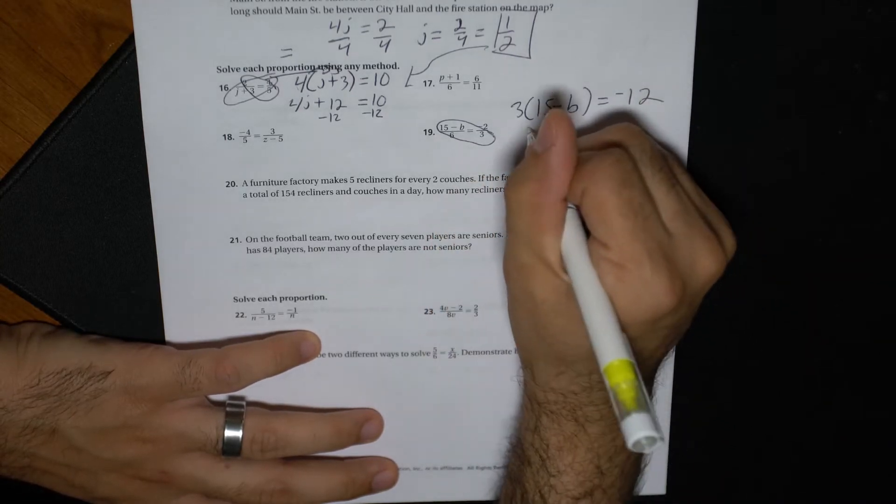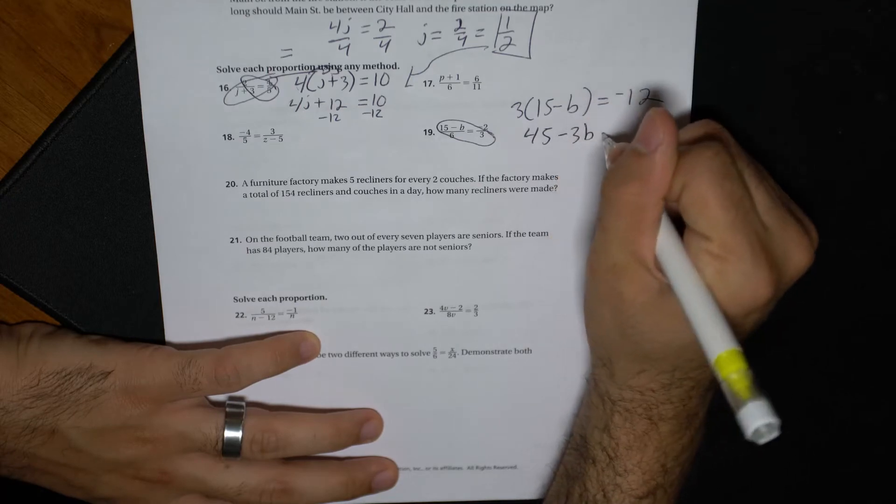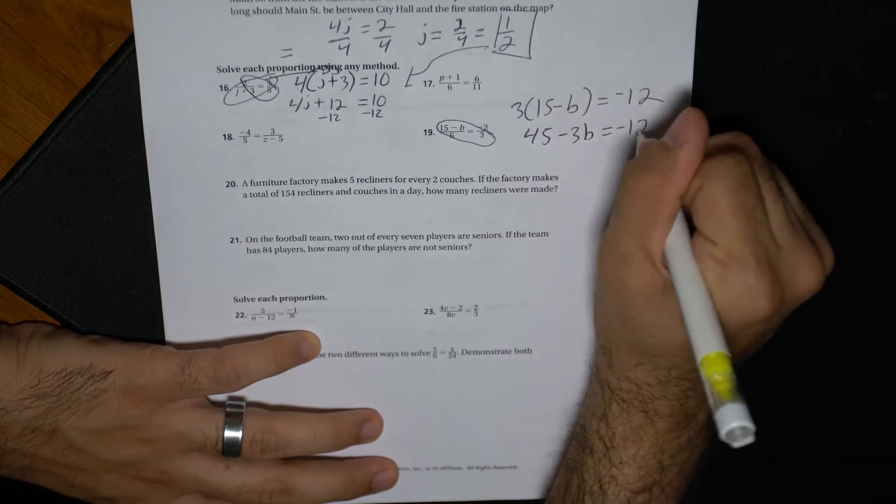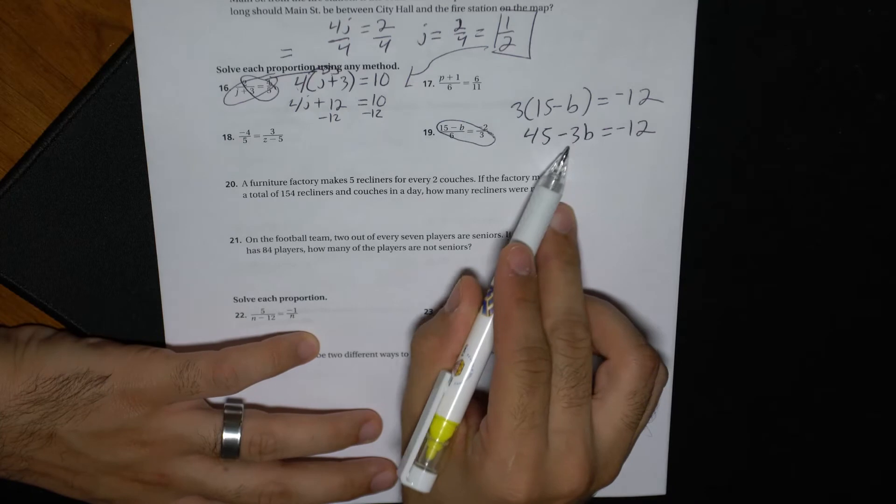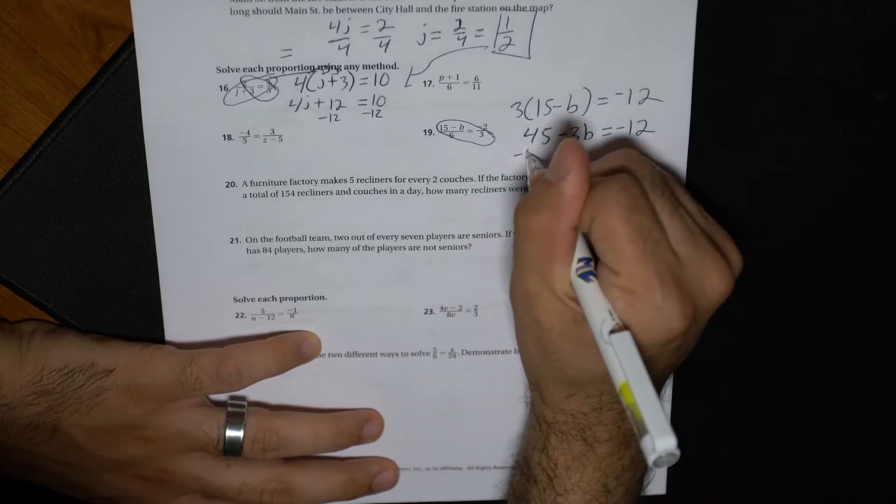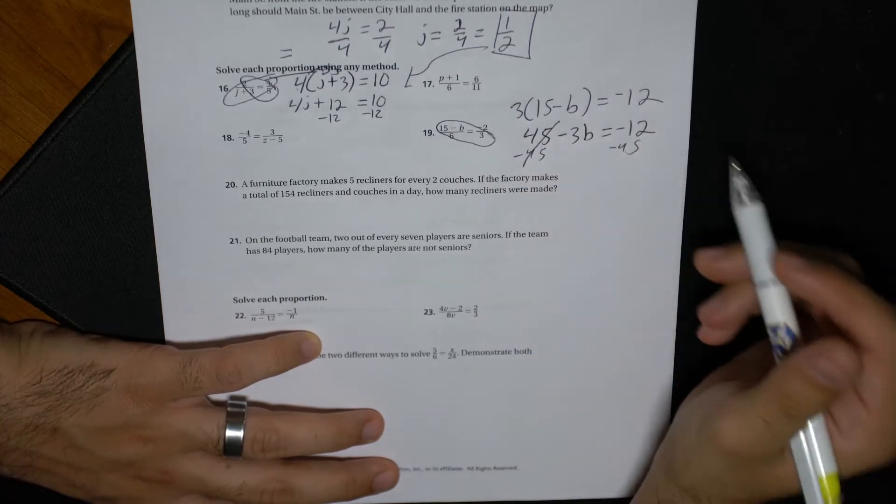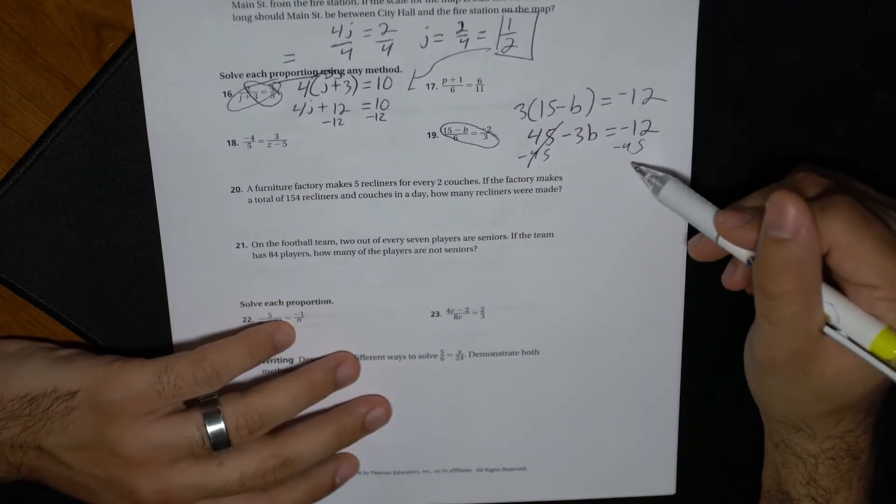Three times 15 is 45. Minus 3b, equals negative 12. I'm going to solve for the b. I want to get this alone. So I have to get rid of this 45. So we say minus 45, minus 45. We know these are going to cancel out.